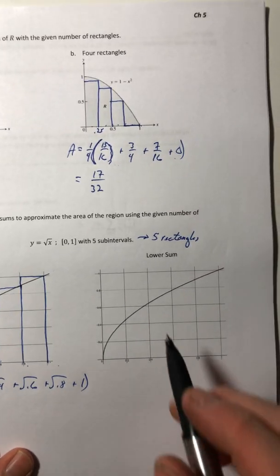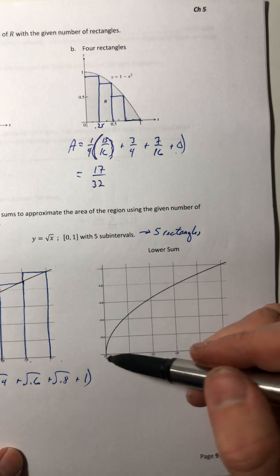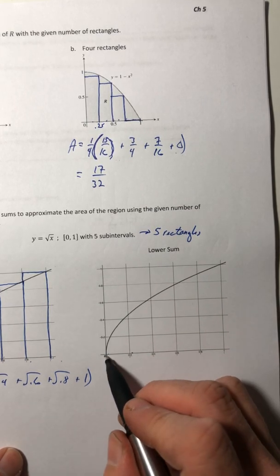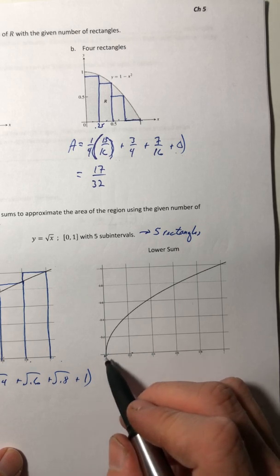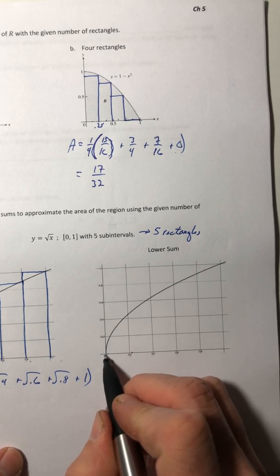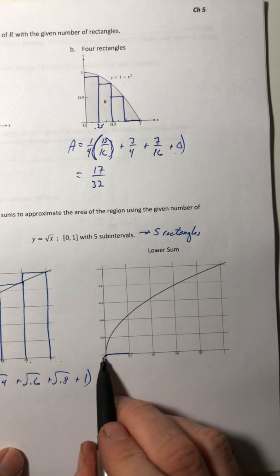So now let's get the lower sum. So when you draw your rectangles, your height is going to be the one that's shorter. So between a left side and the right side, you want the side that hits the curve first. So it's going to be the left. So that first rectangle doesn't have a height.